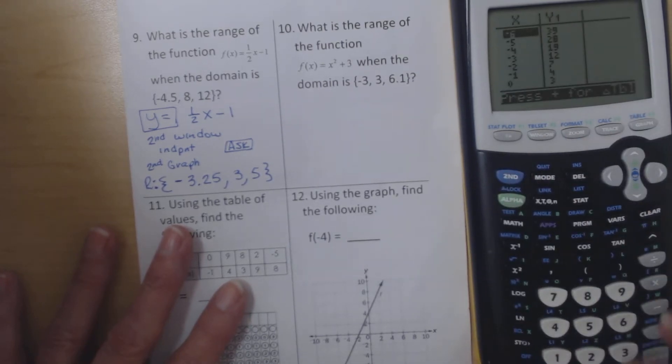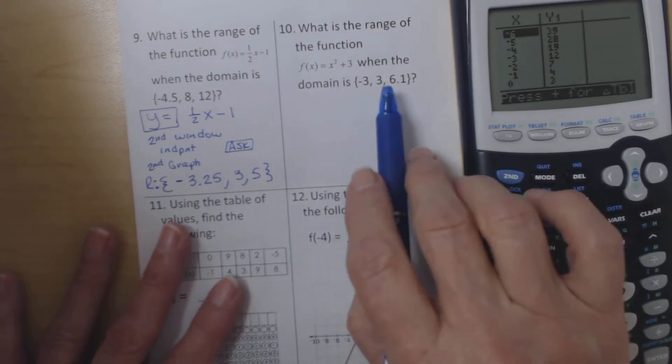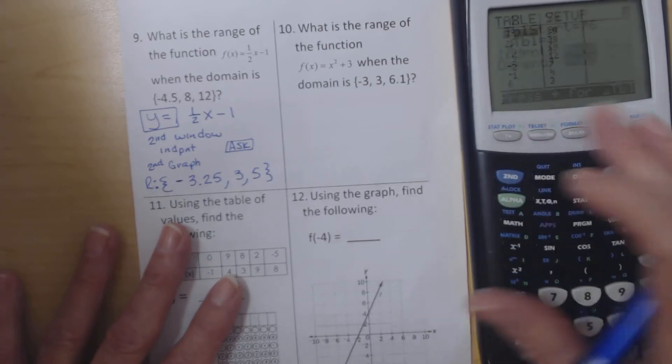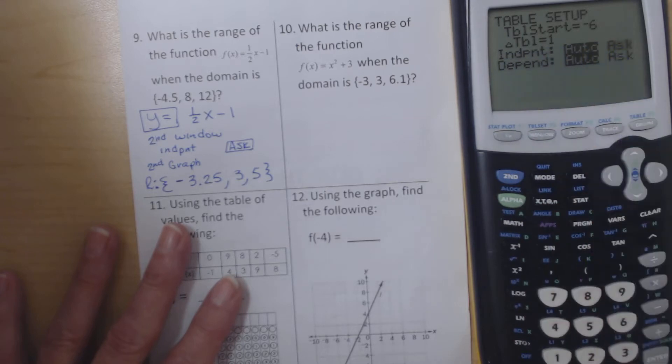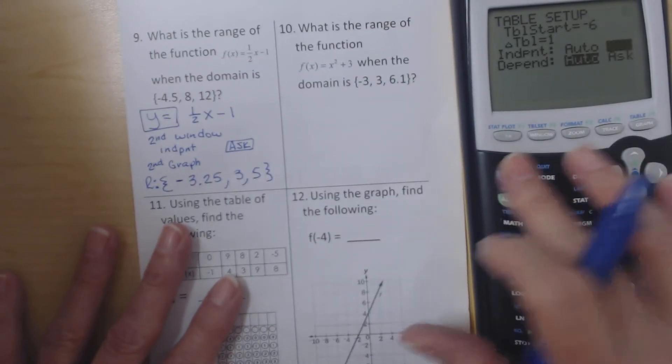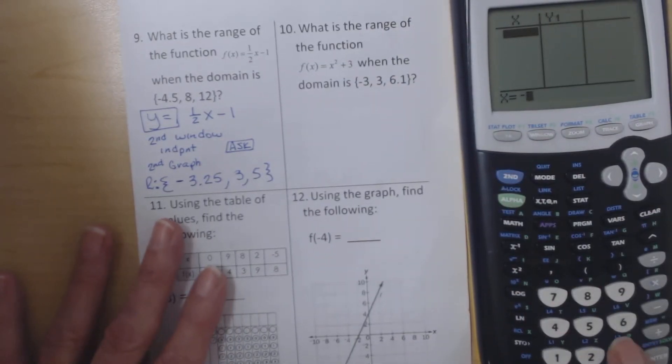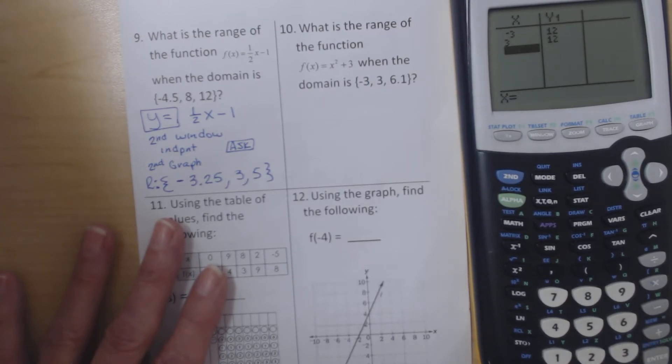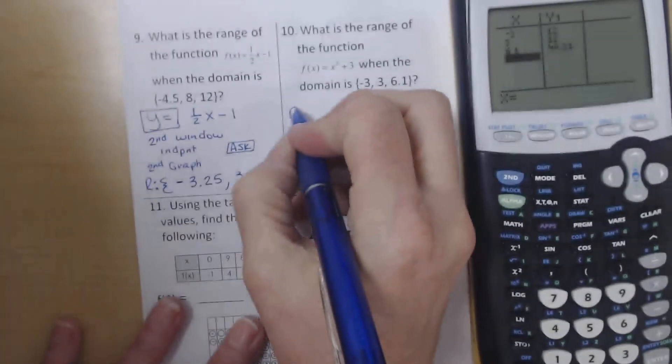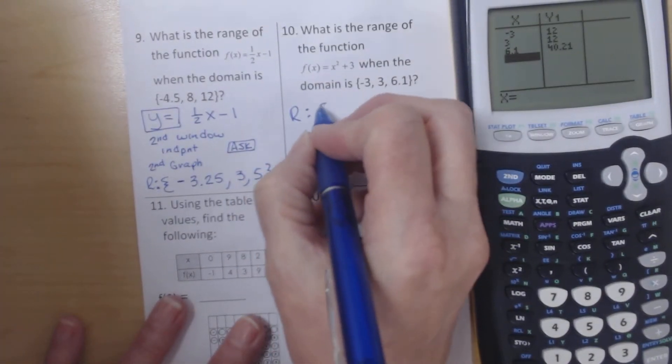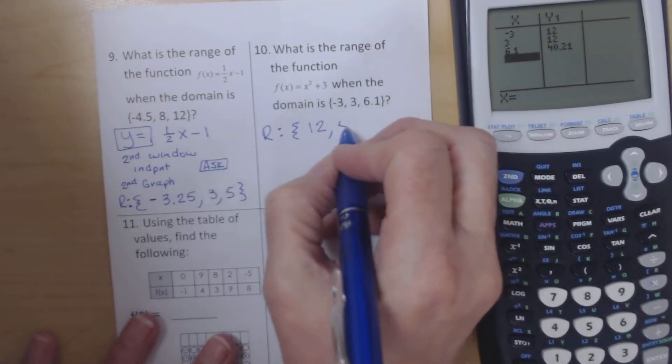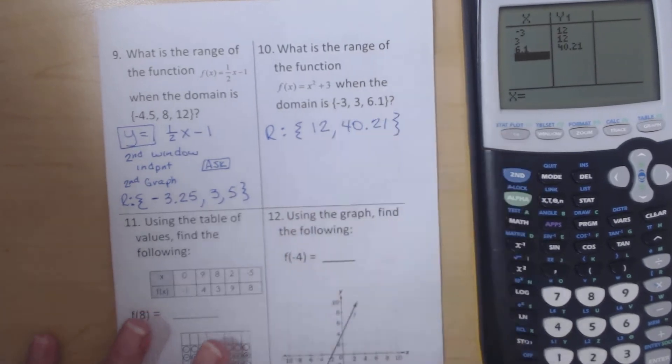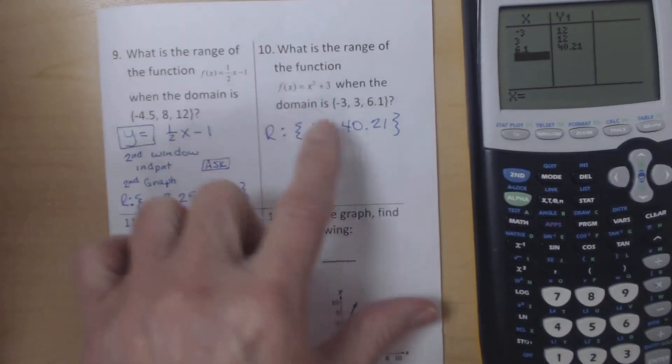So let's go ahead and look at the table. It gives me all kinds of stuff. But I want to go ahead and type just these values in so I don't have to scroll around. So remember you go to second window, go to where it says independent, hit ask. Then go to your table and there's nothing there. So we're going to type in -3, 3, and then 6.1. So our range now is 12, and we only have to put it once, and then 40.21. So that is our range for this function.